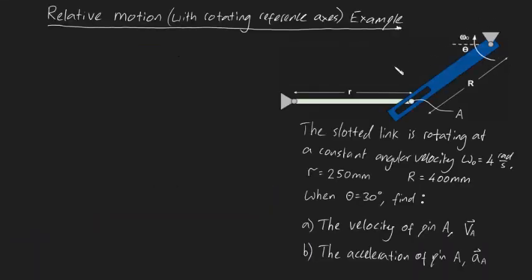G'day guys, in this video I'm going to be showing you how to solve a fairly challenging relative motion problem. We've got this one link right here, which has a pin on its end labeled point A, and this pin is constrained to move within the slot of this larger link. We're told that the slotted link is rotating at a constant angular velocity omega naught equal to 4 radians per second.